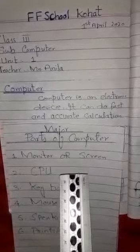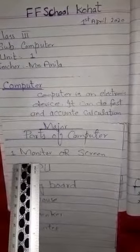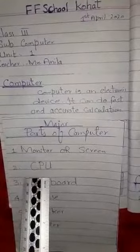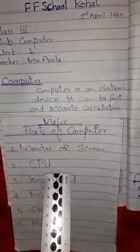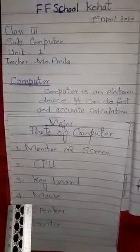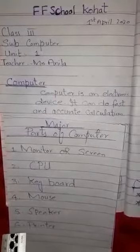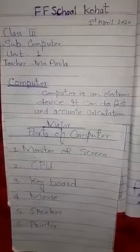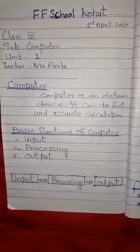The major parts of the computer — you are familiar with them. The first one is monitor or screen, the second is CPU (central processing unit), the third is keyboard, the fourth is mouse, the fifth is speaker, and the sixth is printer.